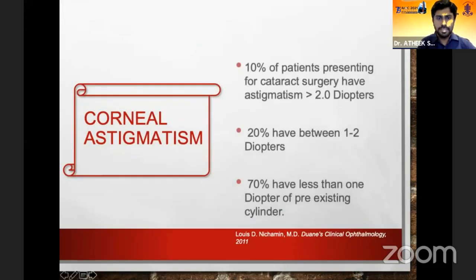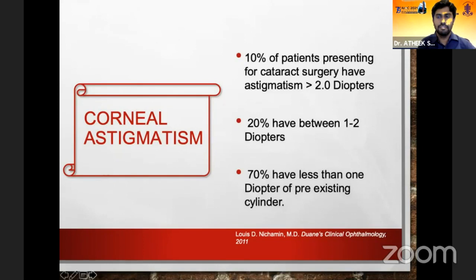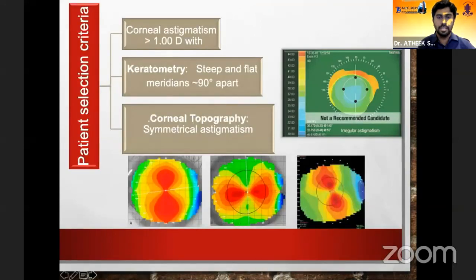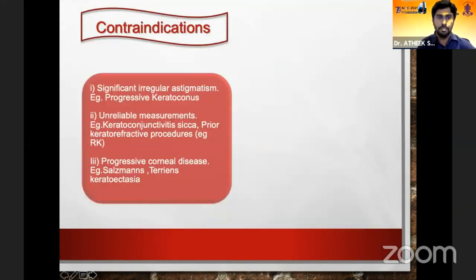About 30% of our patients presenting for cataract surgery have astigmatism that could be corrected by astigmatism-correcting lenses. With regards to patient selection criteria, any patient with astigmatism of more than one diopter, with symmetrical astigmatism and axis 90 degrees apart, can be considered for a toric implant.